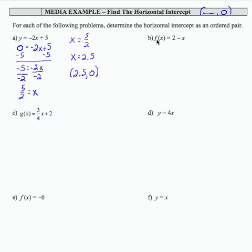For part b, I have a function f of x equals 2 minus x. But remember, I can replace f of x with y. So f of x in its entirety stands for output. So I'm replacing the entire output, which would be y or f of x, with 0. And then I'm solving for x.